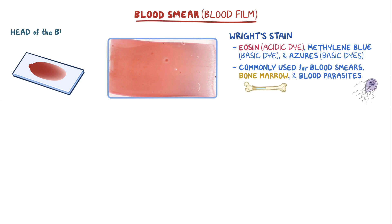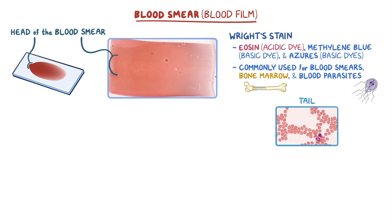The head of the blood smear is where the drop of blood was applied to the slide. When the blood was spread from the head to the right side of the slide, the thin layer of blood gradually became even thinner. The tail of the smear is the last portion of the smear that visibly tapers even more.